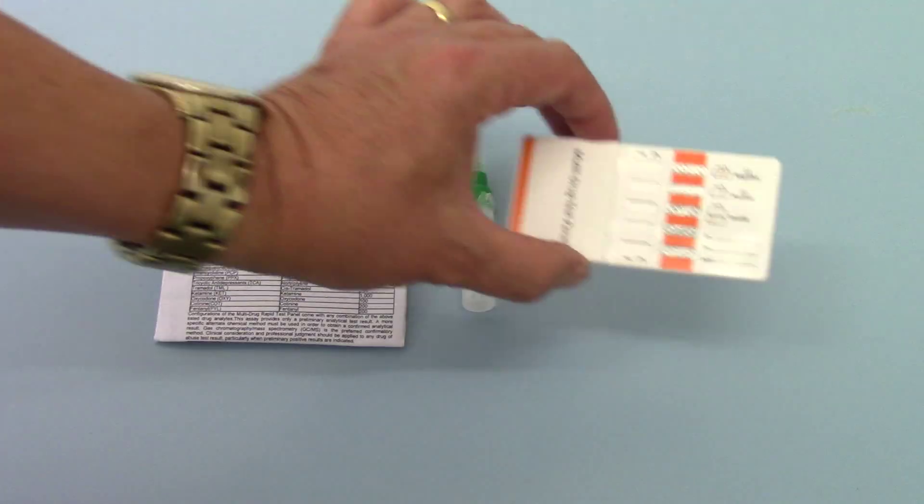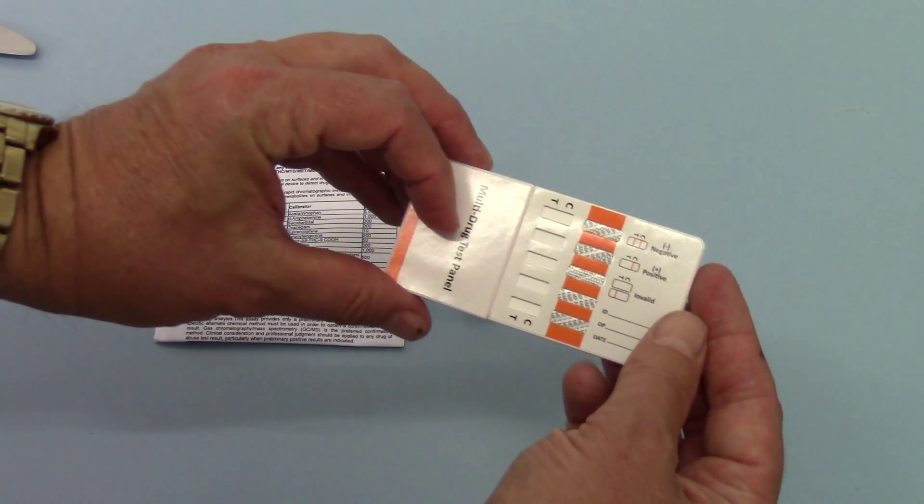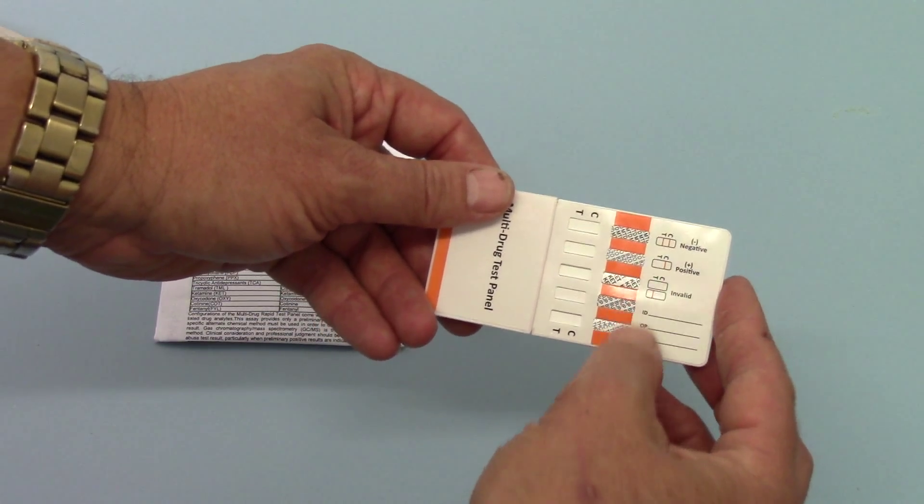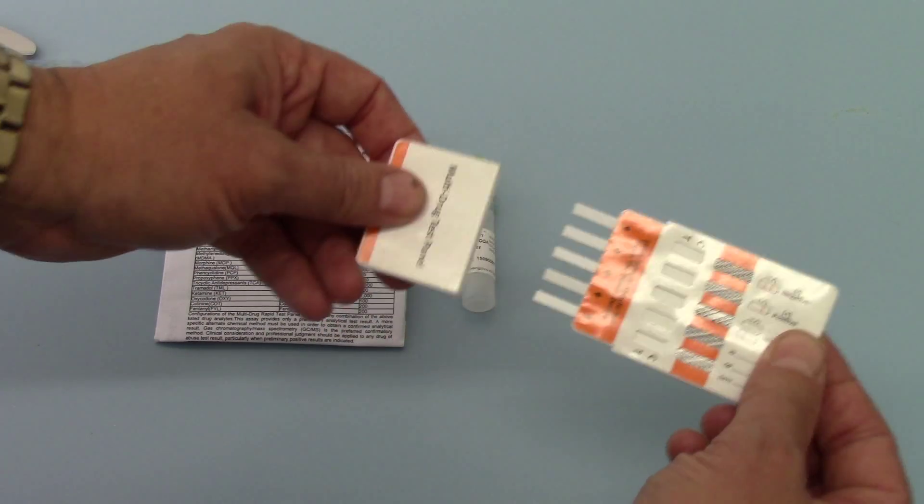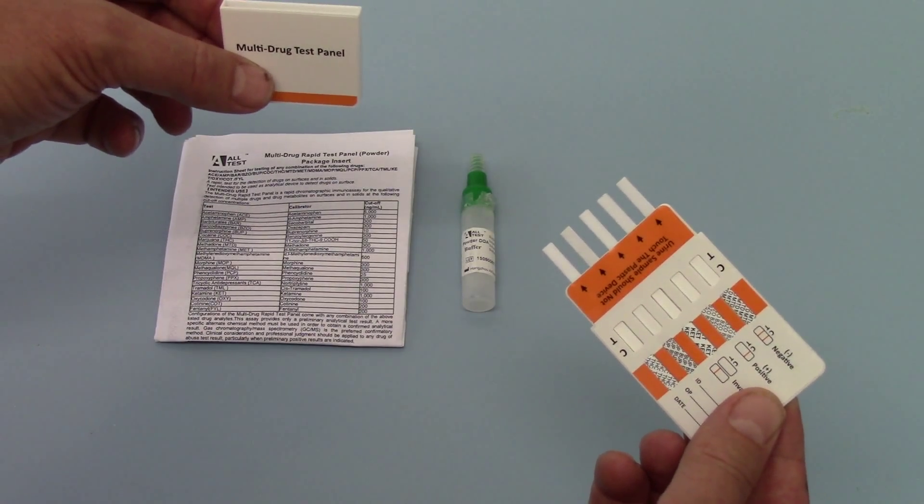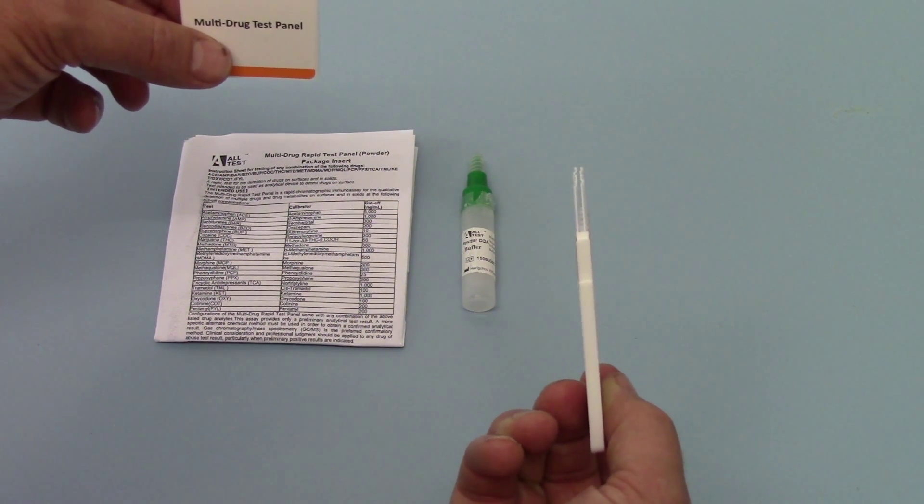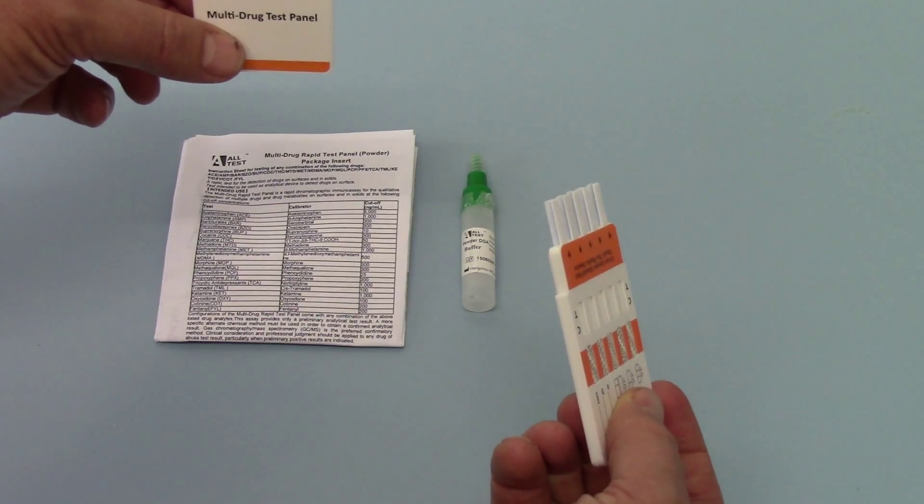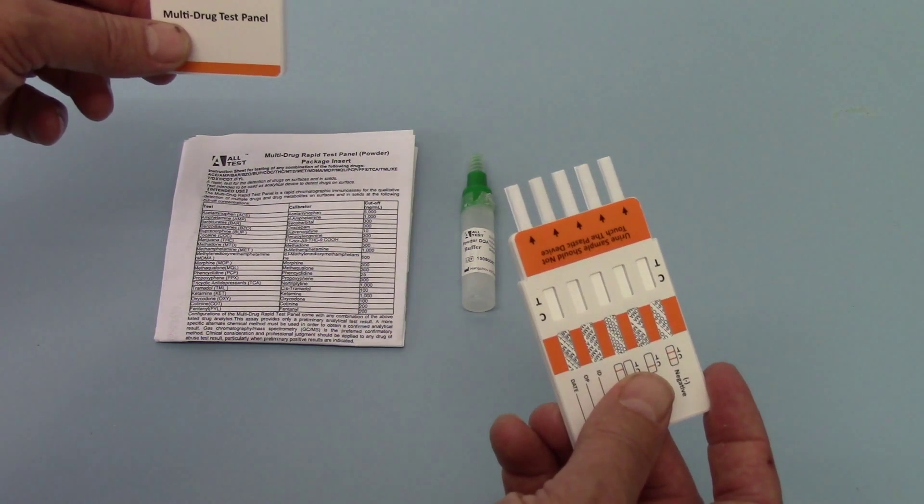And then what you have here is a panel test, a double-sided panel test with the abbreviations for the drugs which each membrane is detecting. And if you remove the cover, you will see five on one side and five on the other prongs coming out from the test.